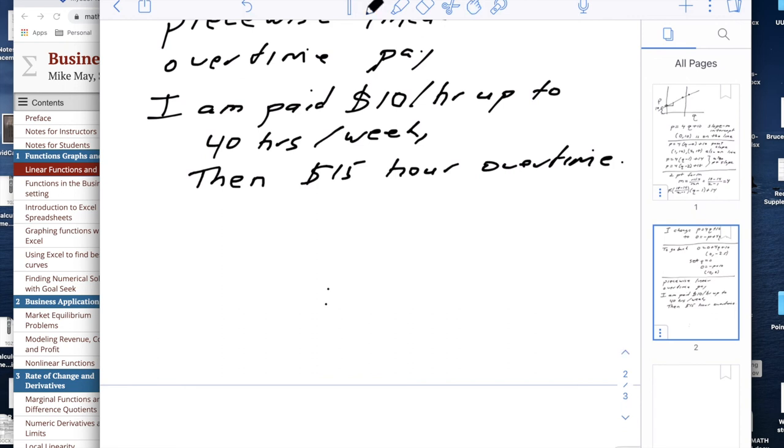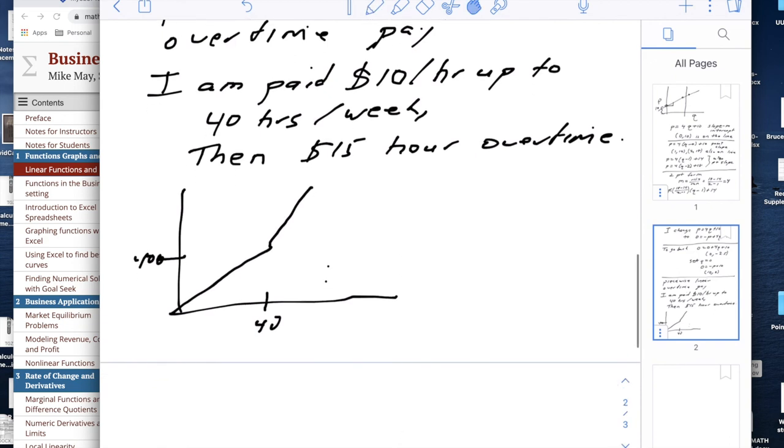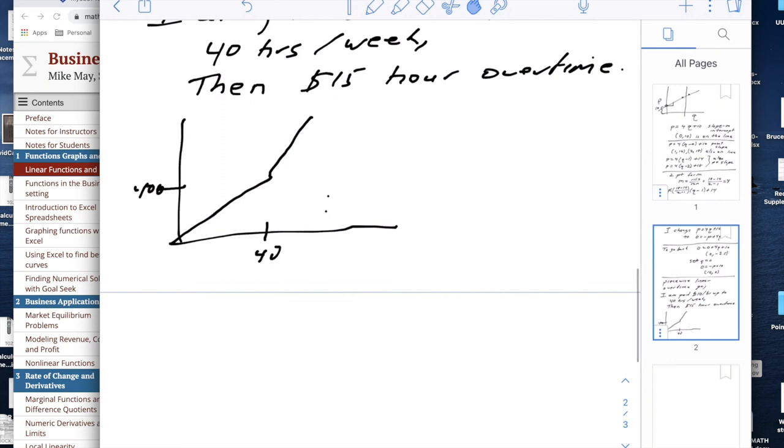If I look at that and want an equation for that, I'm going to first think about what it looks like. My pay starts linear up until I get to 40, and then it becomes steeper. Well, this is at 400, $10 an hour, $40 an hour. And so if I'm looking for my equation, my equation for this is going to be pay in terms of hours.